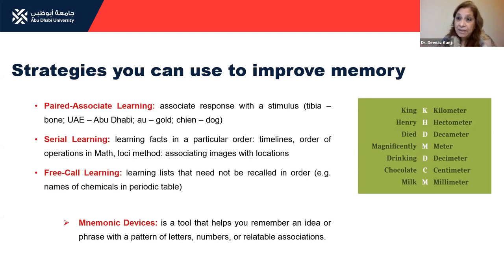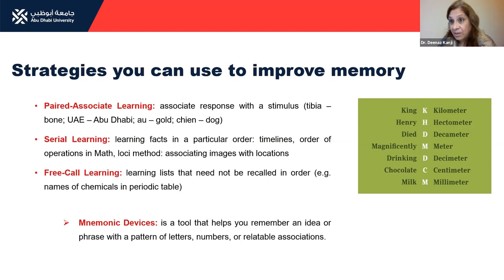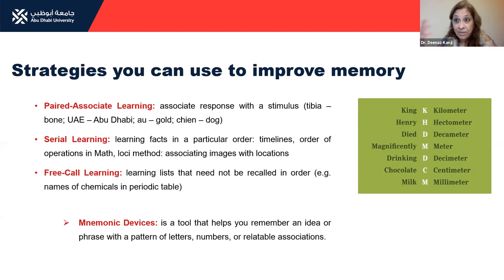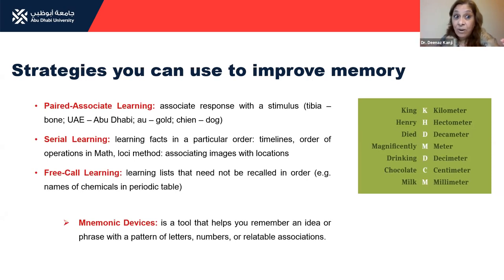Another strategy to improve learning and memory is having students learn lists of things, or associate images with locations. For example, showing them pictures and asking where they think this is, or giving them timelines or order of operations in math. And the last kind of memory strategy is something called free recall learning, where you don't want them to learn a list but just have them say: 'which chemicals are in the periodic table?' or 'which countries are members of the United Nations?' — they don't have to recall a list or use paired associate learning.